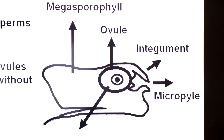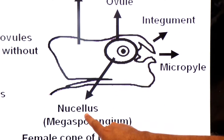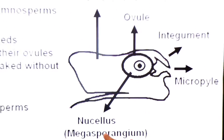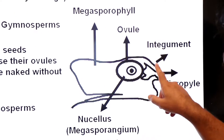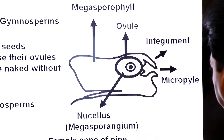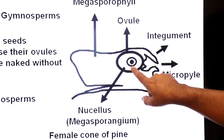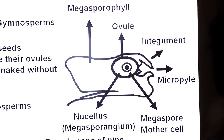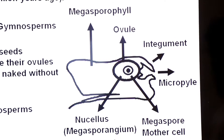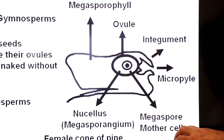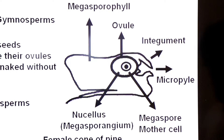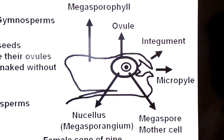This is the megasporangium — the nucellus. Nucellus is the megasporangium, and nucellus along with integument is called ovule. Ovule ke andar ek diploid cell hota hai — megaspore mother cell — jo aage meiosis mein divide hoga, functional megaspore produce karega. Aur functional megaspore se female gametophyte aur archegonia produce honge.